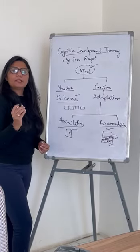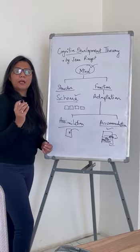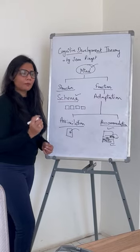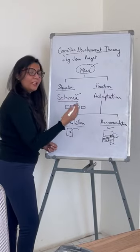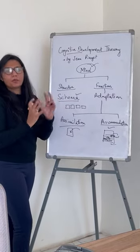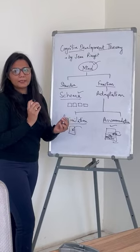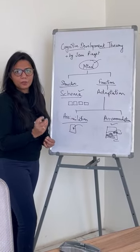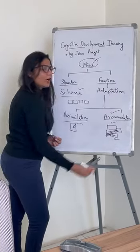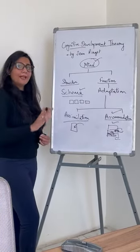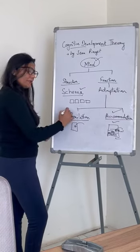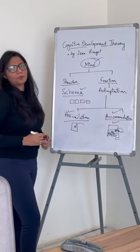Here is the main trick for exam questions. If the question shows that there is a change in the schema — the schema is modified with new information — then the answer will be accommodation. If there is no change in the schema, then the answer will be assimilation. This is actually simple.